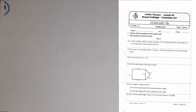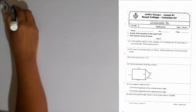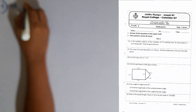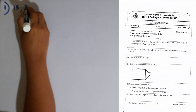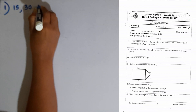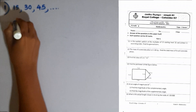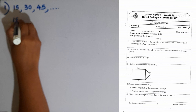First question. In the number pattern of the multiples of 15, starting from 15 and written in ascending order, find the general term. If we write the pattern here: 15, then the second multiple is 30, 45. This is the way we are writing the sequence. So the general term is 15N.